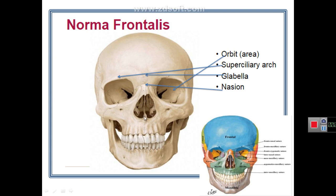The forehead region shows the frontal prominences and an arch above the medial half of the supraorbital margin called the superciliary arch, which lies below the eyebrows. The superciliary arch is a prominent bony arch above the medial half of the supraorbital margin. The right and left superciliary arches meet in the midline in an elevated area called the glabella, which is very important in clinical examination.